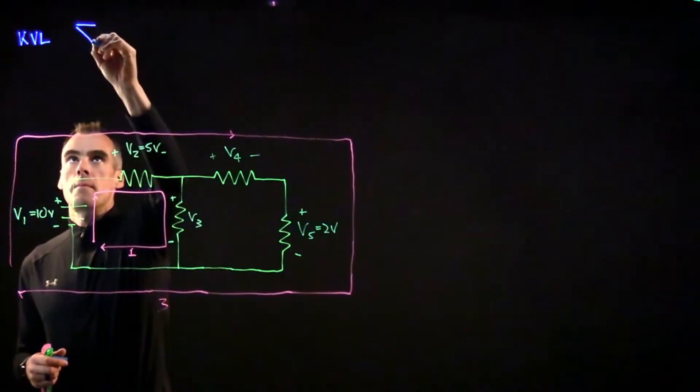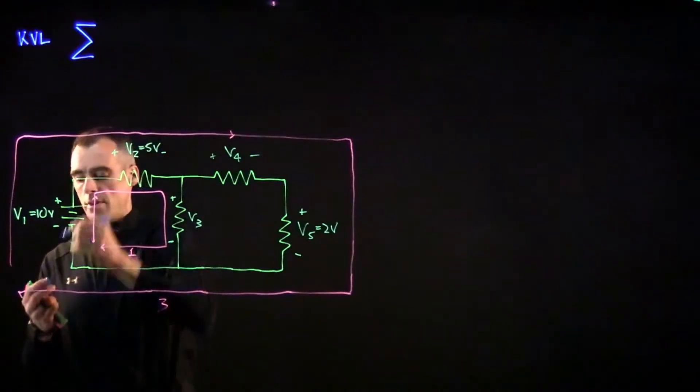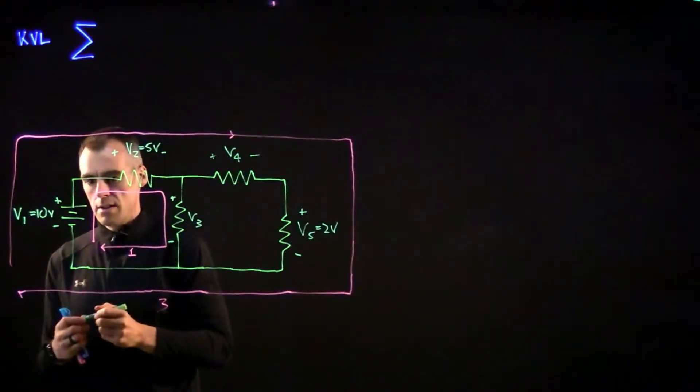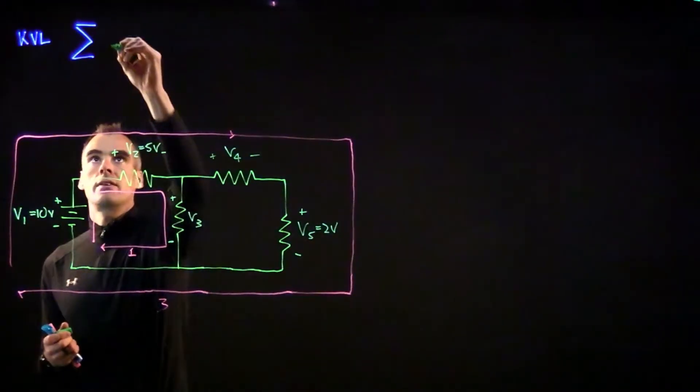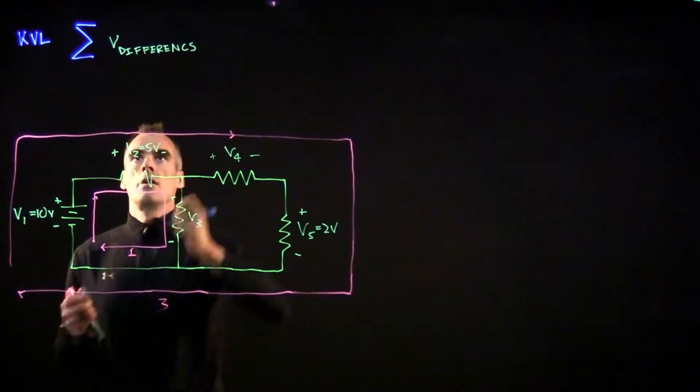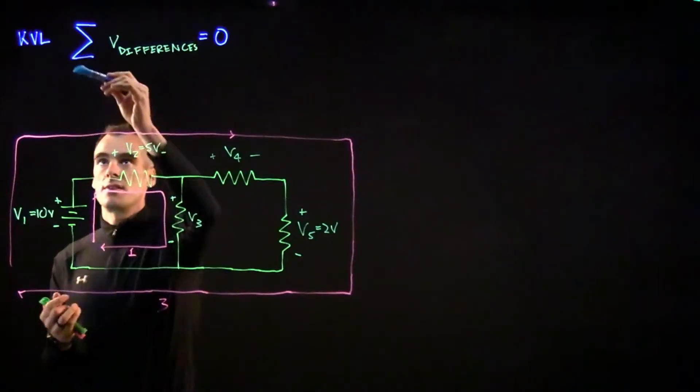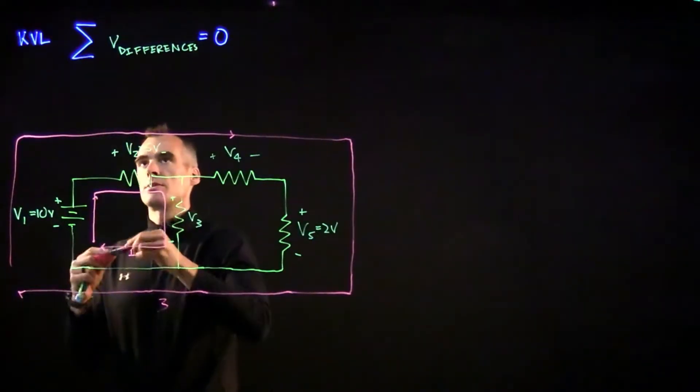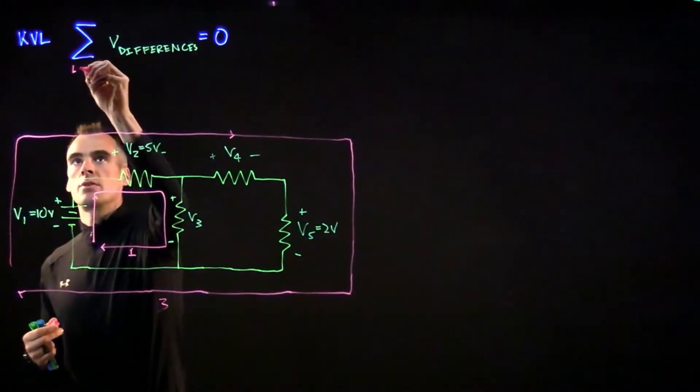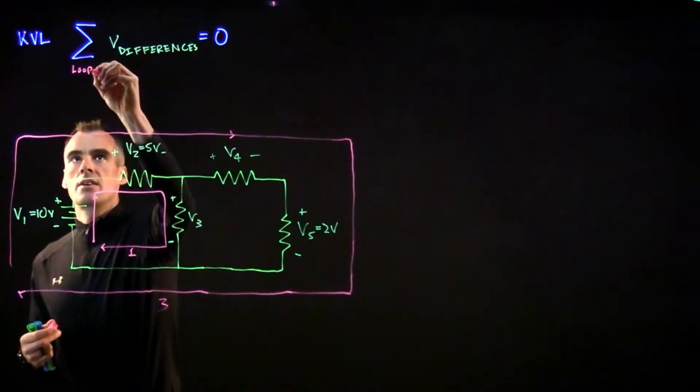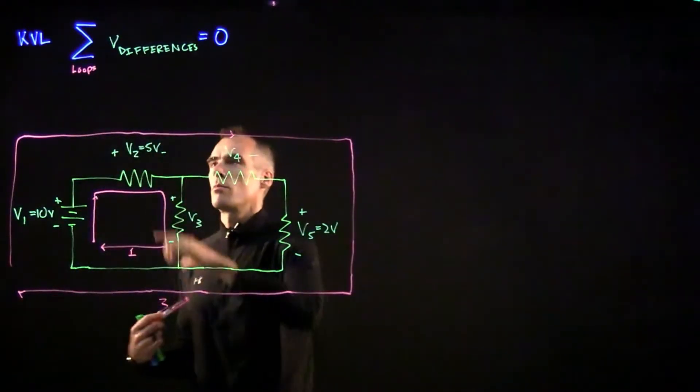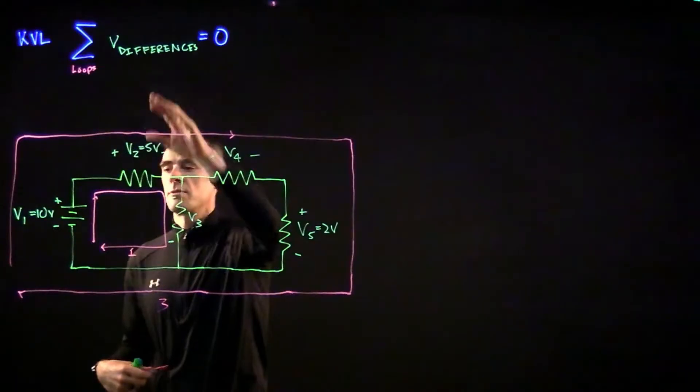We've got this sum of our voltage differences, which we denoted in green down here, is equal to zero. And of course we're summing around each of these loops, so let's denote that we're talking about loops here. So again, Kirchhoff's voltage law is with respect to loops and voltage differences.